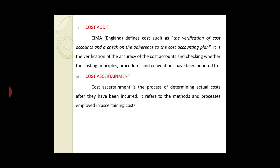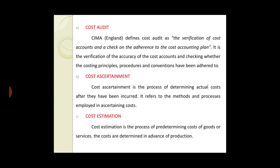Cost ascertainment is the process of determining the actual cost after they have been incurred. It refers to the methods and processes employed in ascertaining costs. Cost estimation is the process of pre-determining the cost of goods and services — costs are determined in advance of production.